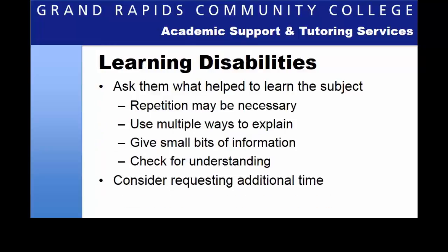Learning disabilities are a hidden disability and you likely won't know that a student has one unless they tell you. Here are some tips if you suspect or are told that a student has a learning disability. First, ask a student what helped them learn a specific subject in high school, as they are the experts on how they learn. You may have to repeat concepts in multiple ways — tell them about a concept, use a drawing to show it, and give a real-world example if possible. Another common technique is to give small bits of information at a time, then ask the student to explain it back to you to check for understanding. If the tutorial session continually feels rushed due to extra time needed, consider asking your supervisor for a little more time with the student. Showing empathy and understanding are sometimes more important than the topic you are working on, as having a learning disability can make a student feel isolated.